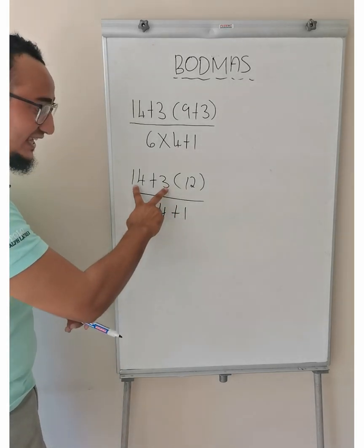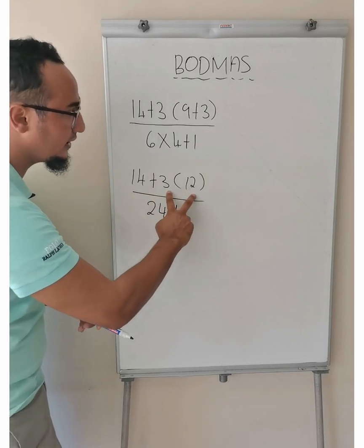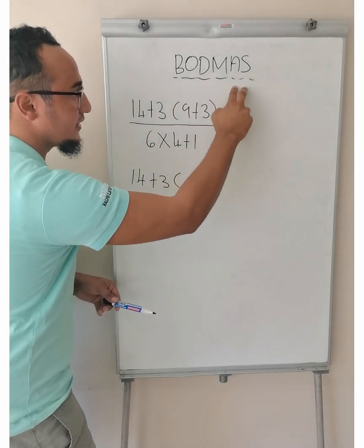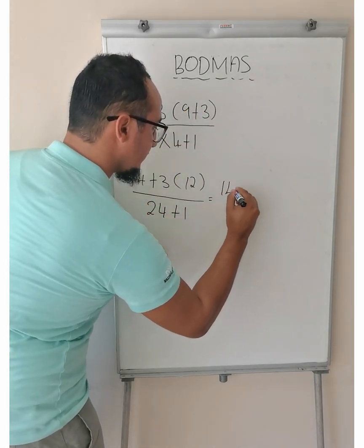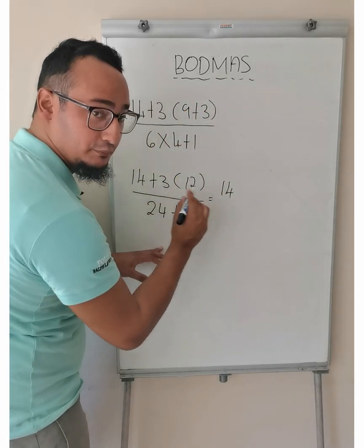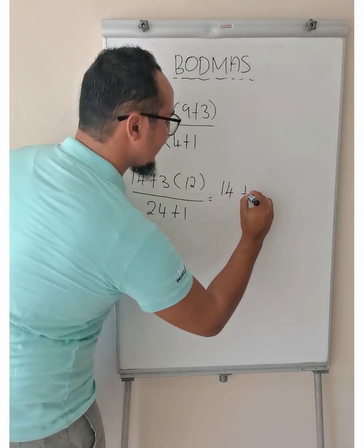Right. If I go further, do I first add this to or do I multiply? What does Bodmas say? First multiply before you add. So, it's equal to 14.